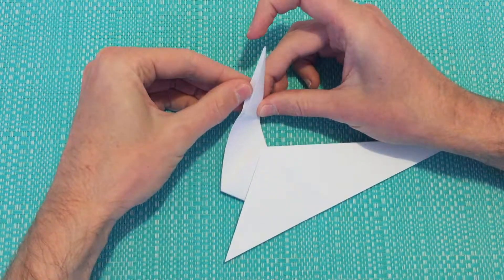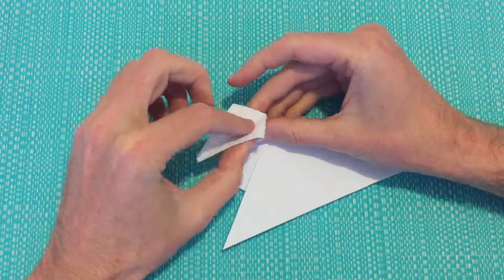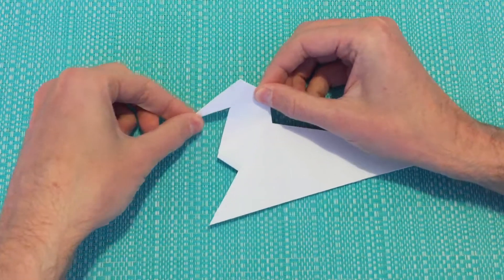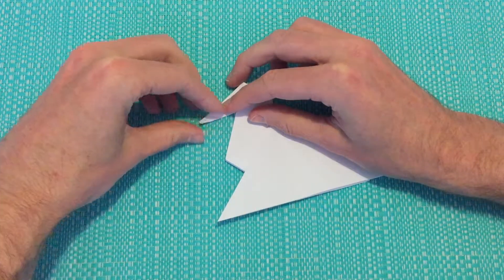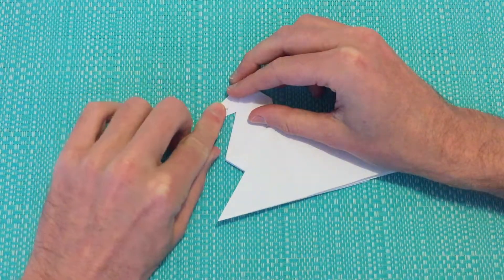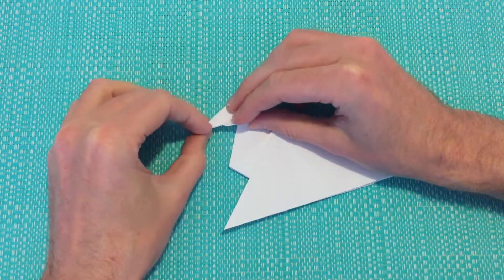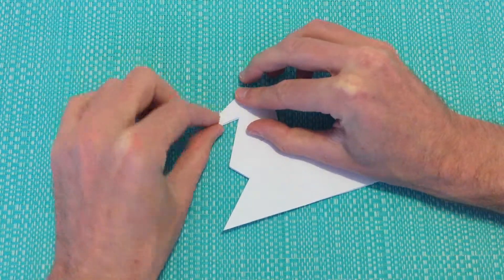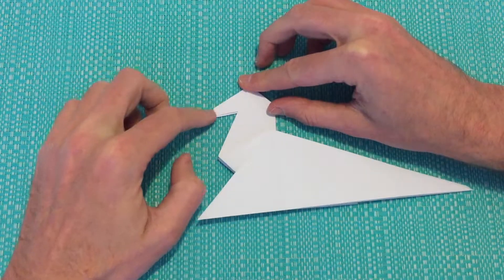And then we'll open up the fold completely and we'll just press that in. Now we'll do the same for the point here, just folding that point in, only slightly. Then opening that flap up, pushing the point inside, and bringing the folds back together. Just to round off that nose area.